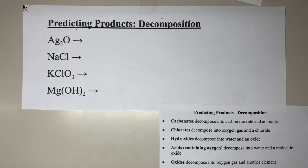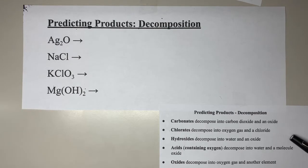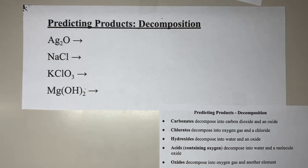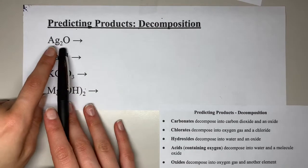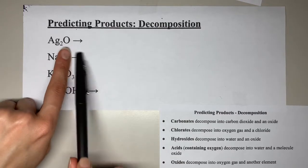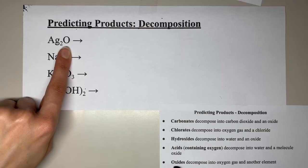We are going to stick with just two products being made, though some decomposition reactions will make more than two. You are going to need to use your predicting products reference sheet — located on the back of that sheet — to help you with predicting products for these problems and the problems on assignments and quizzes. We're going to start with silver oxide.